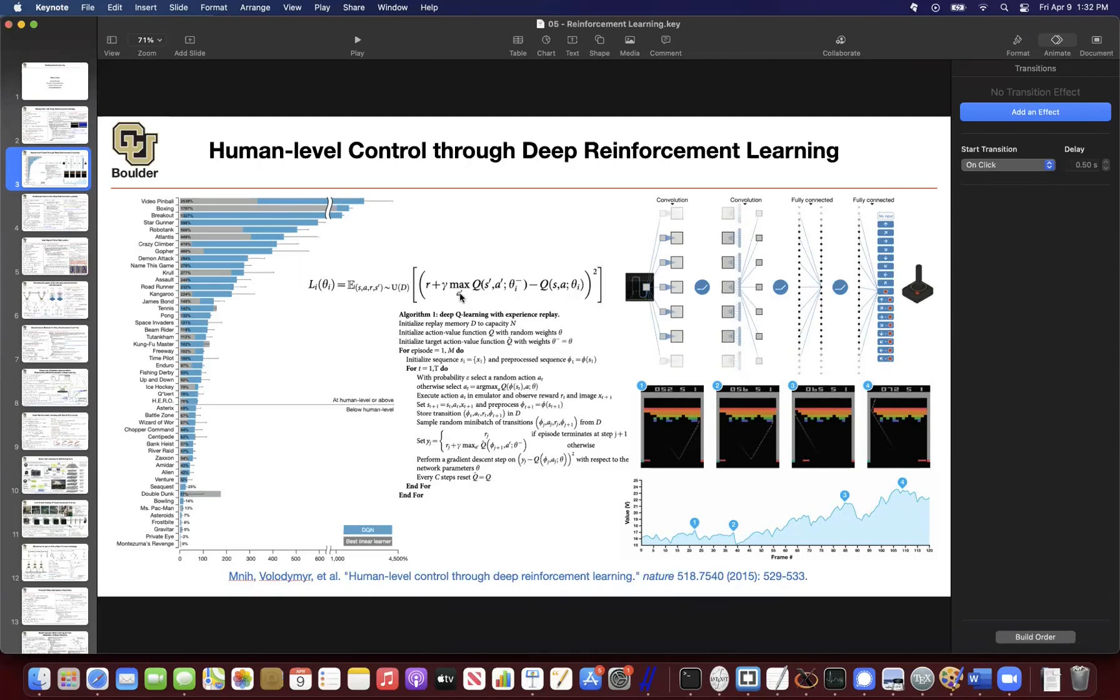So it means that these actions are going to be highly correlated. They are going to all get scattered in a tiny region of your space because they are getting generated by Q. And it means that they are not IID samples from a distribution. They are not diverse.